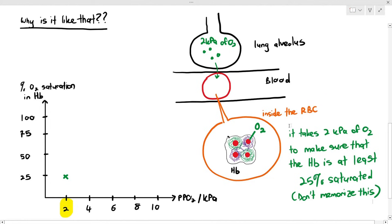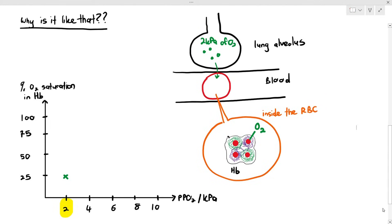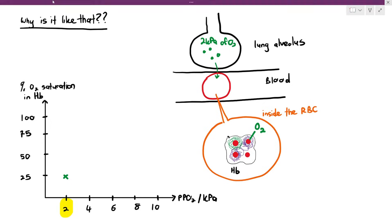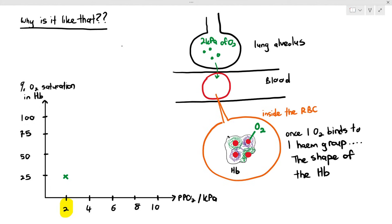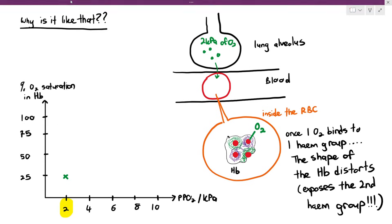The next part is the important one for the exam — understand, memorize, and be able to explain it. When the first oxygen molecule binds to the heme group, notice what happens to the shape of the hemoglobin: it becomes distorted. You might think that's bad since a protein's 3D structure changing is normally a problem. But in this case it's not, because look at what happens to the second heme group — it is no longer hidden by the polypeptide chains. It is now exposed.